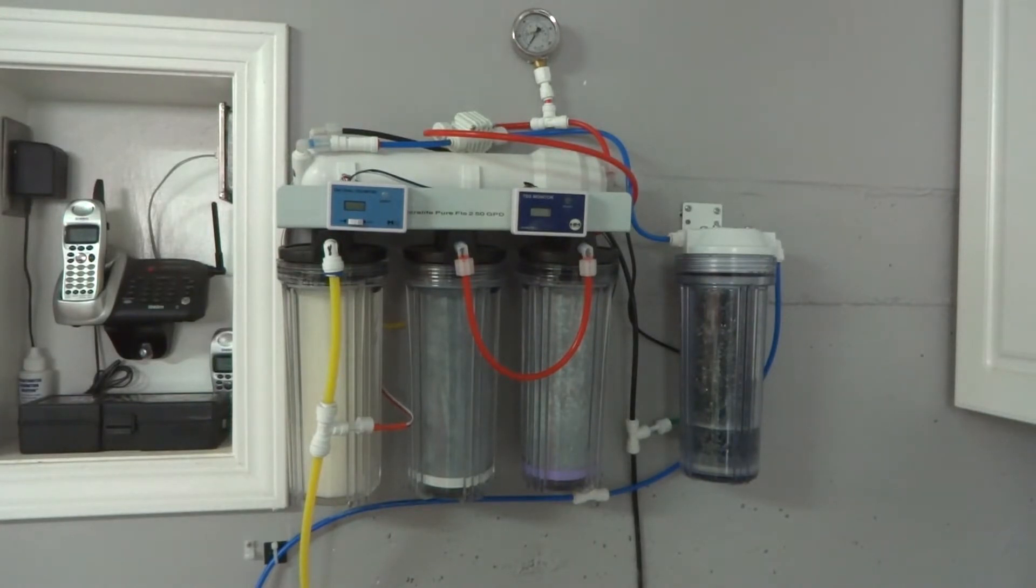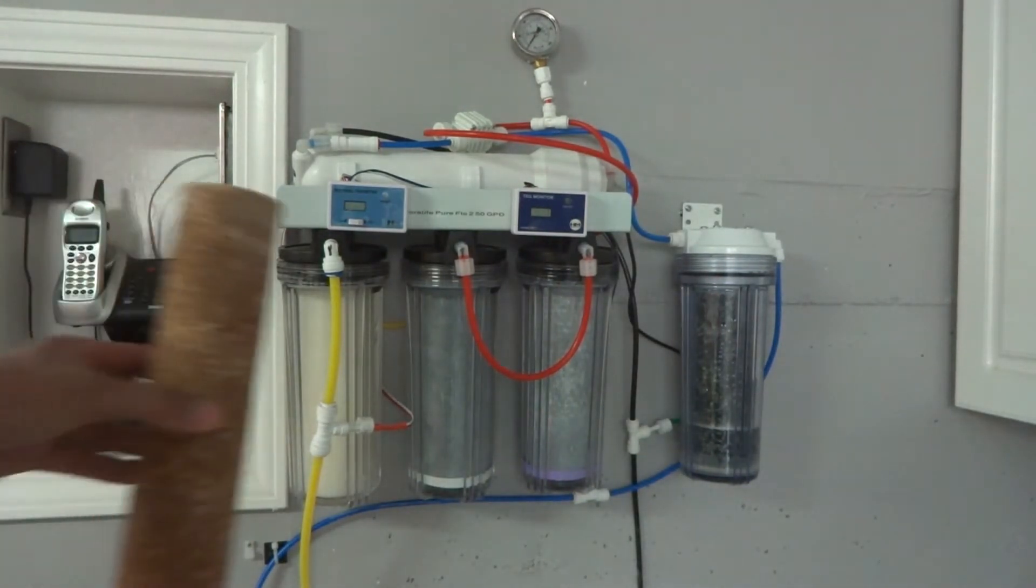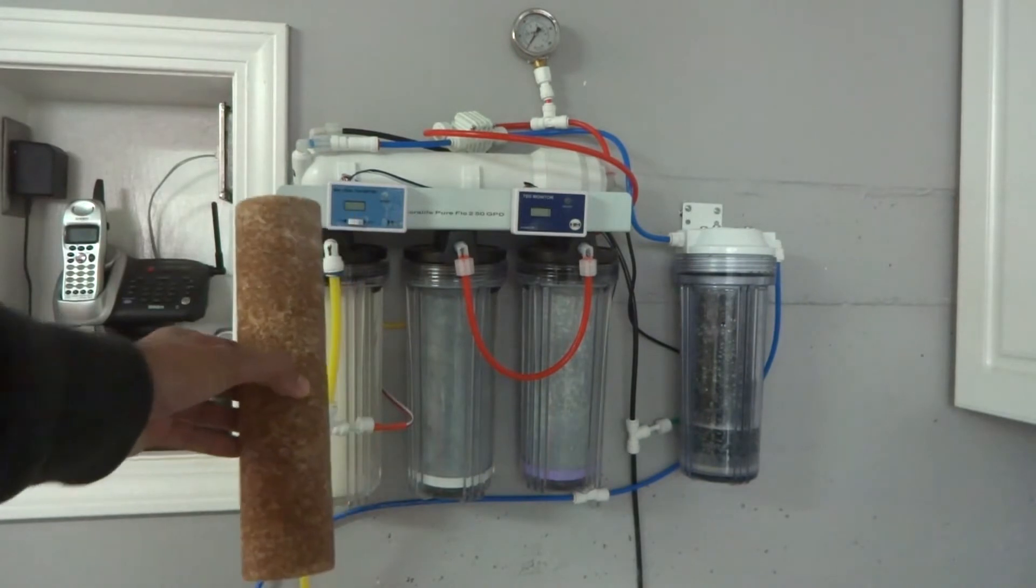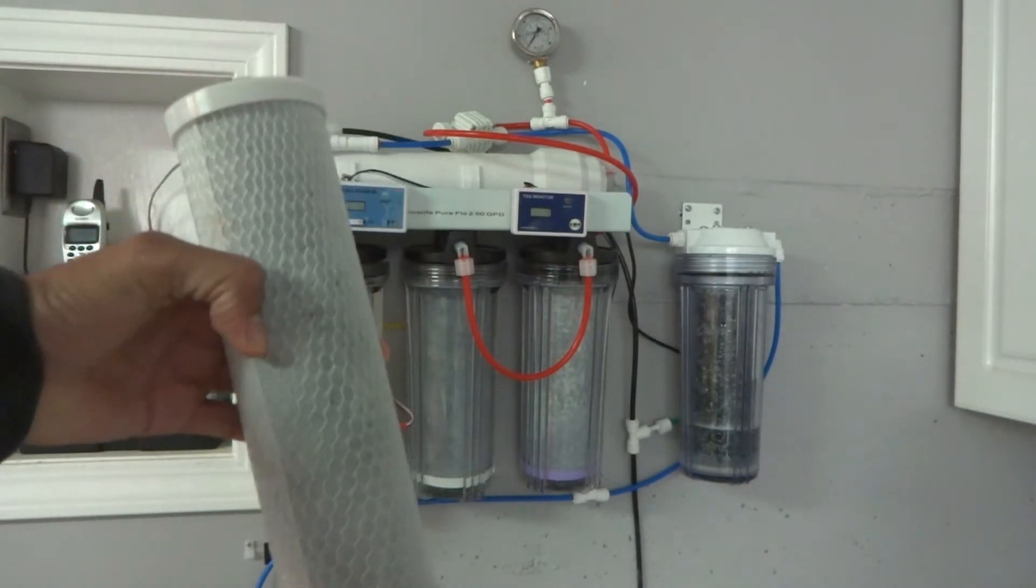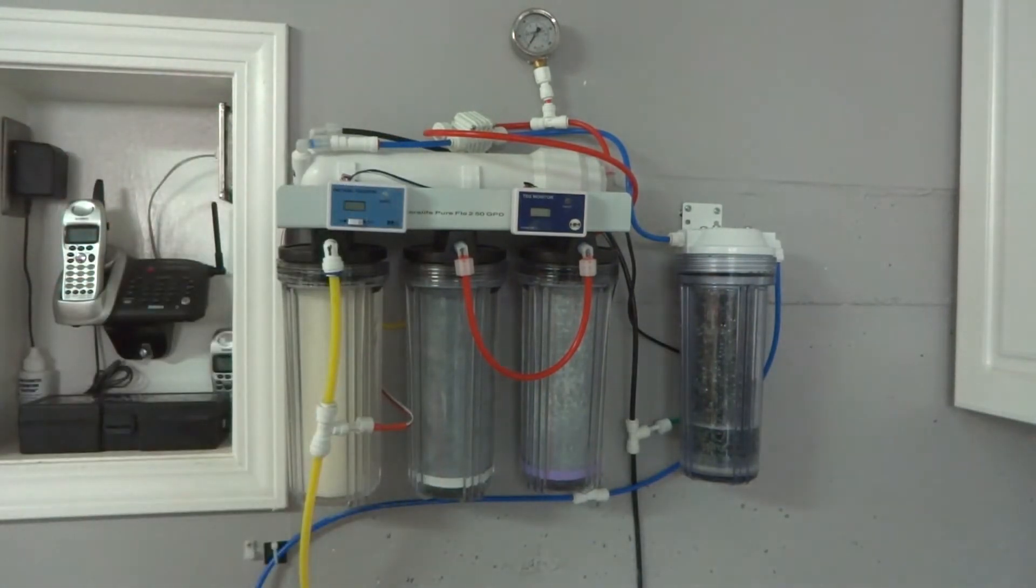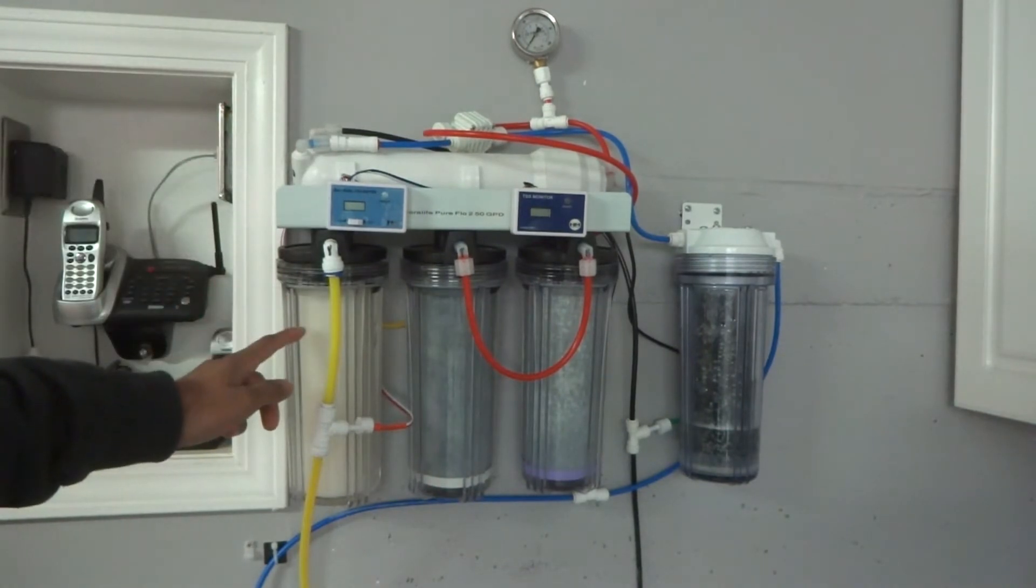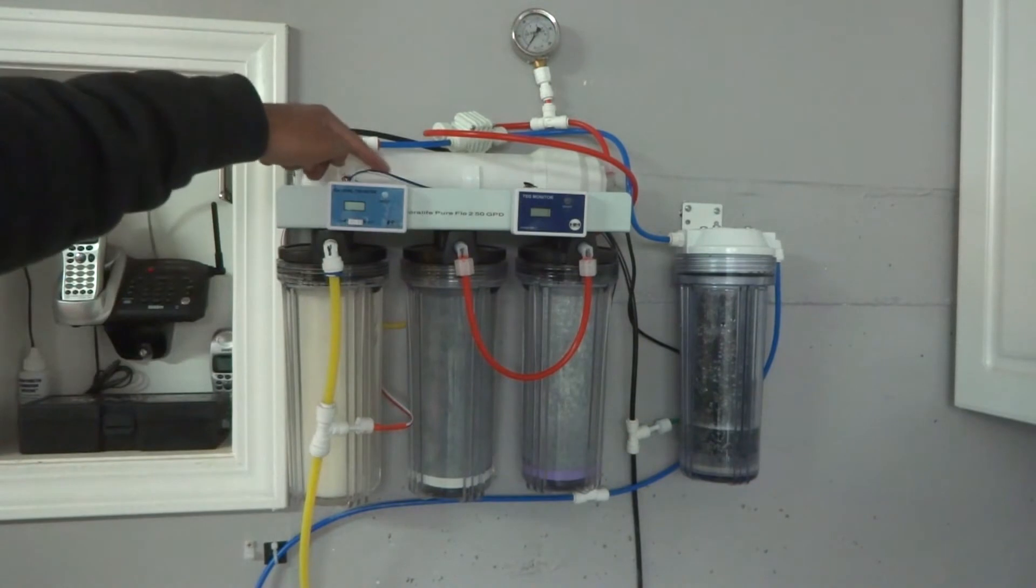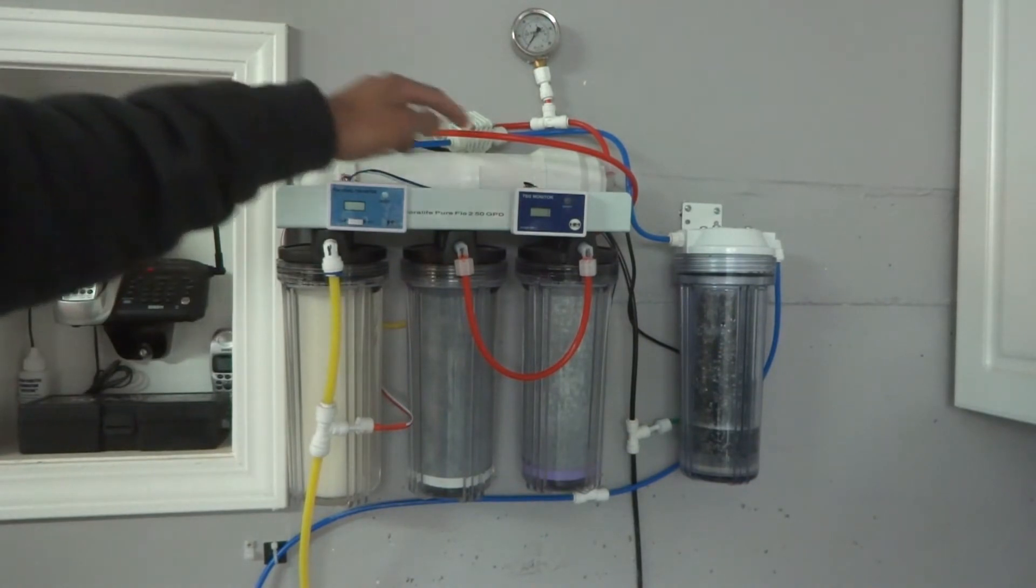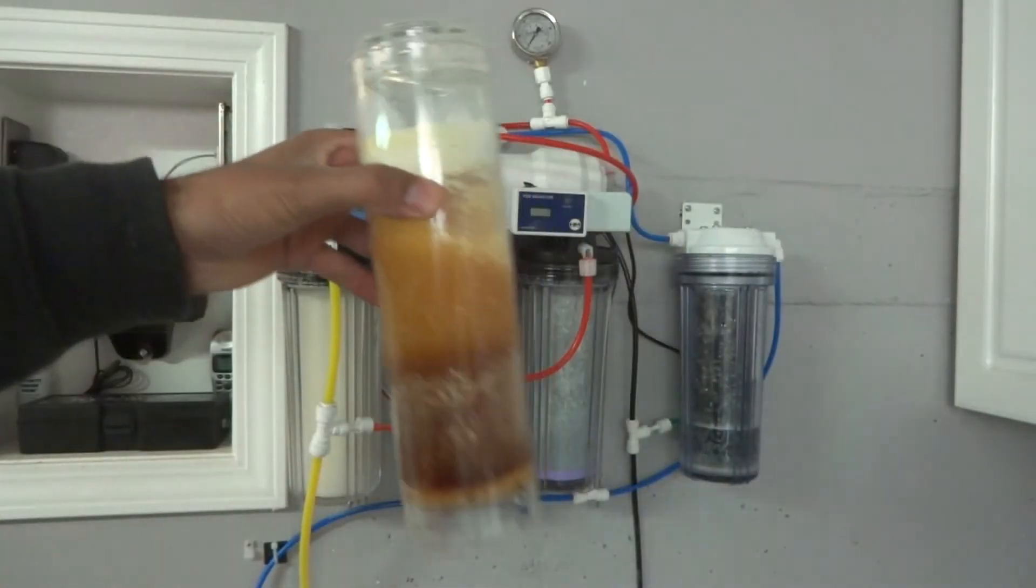The reason I had to change the direction of the water flow was because originally this sediment filter, which is very dirty, was in the first stage followed by a carbon filter, followed by the membrane. So it went sediment to carbon, then from carbon to the membrane. From the membrane it went to this last stage which was a DI resin stage.